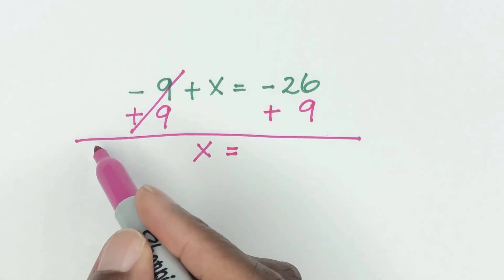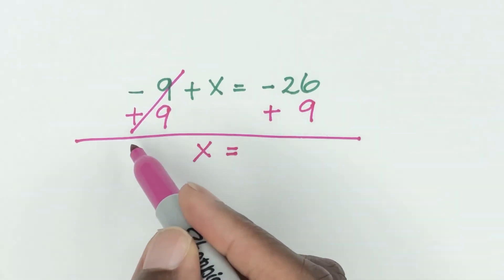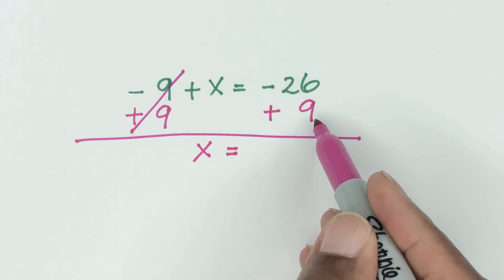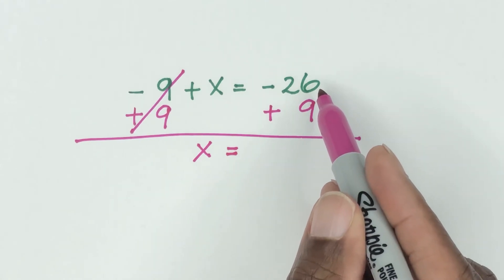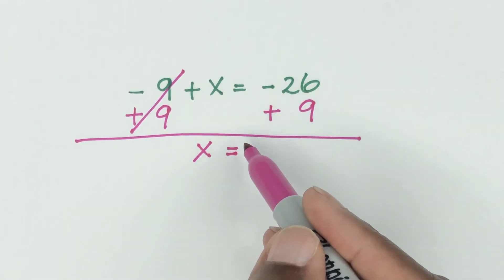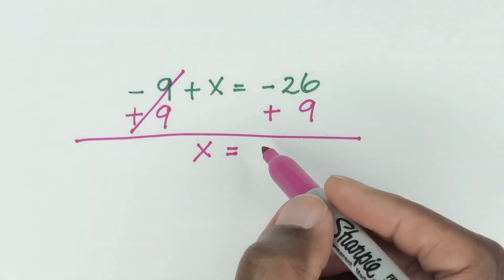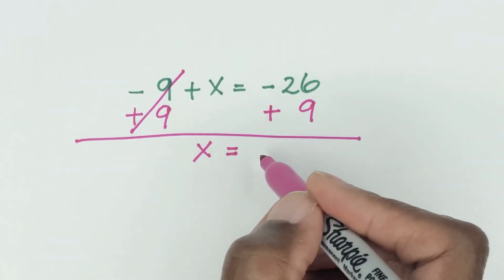So if you're on the negative side of the number line and you're on minus 26 but you've only come forward going towards the right 9, then the minus 26 has gone down but you haven't quite crossed over to the plus side yet. So then X equals, you're still on the minus side, therefore X equals minus 17.